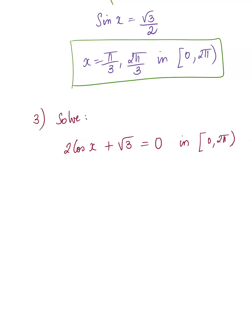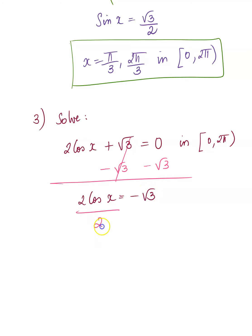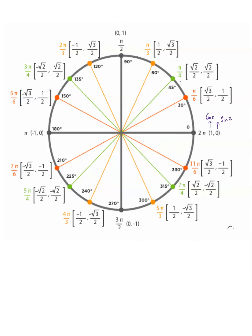Here we have one x term but need to get x by itself, so subtract √3 from both sides. This time we are looking for cosine x. What angles give cosine = -√3/2? Cosine is the x-coordinate, so we look for x-coordinate = -√3/2. The x-coordinates are negative in the second and third quadrants, so -√3/2 occurs at angles 5π/6 and 7π/6.